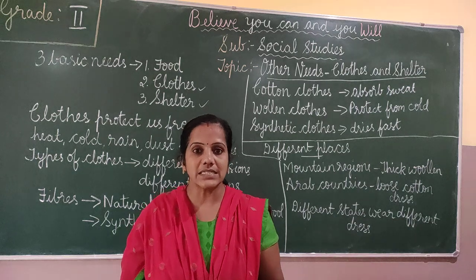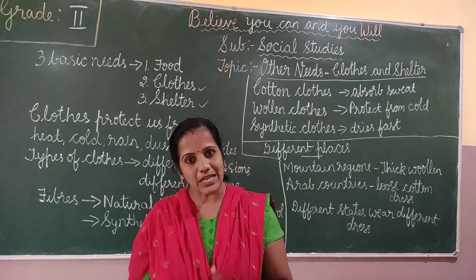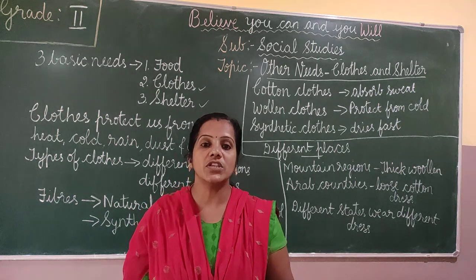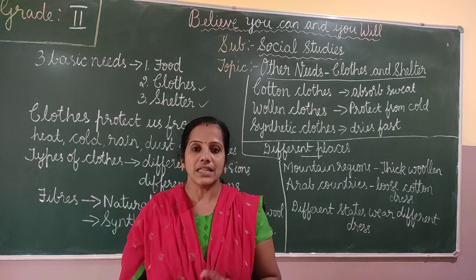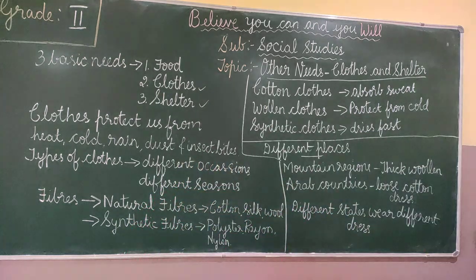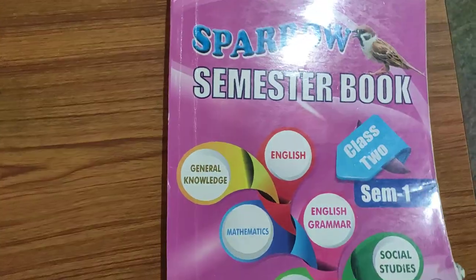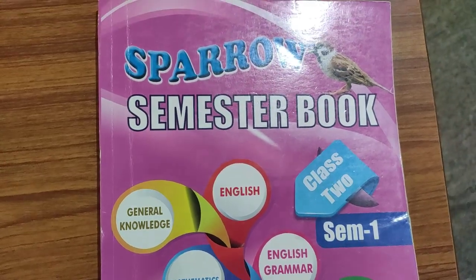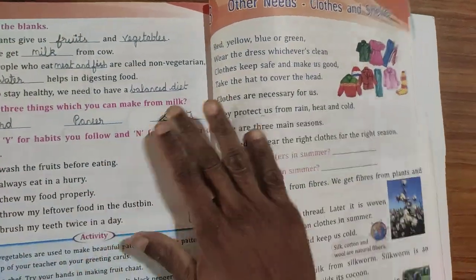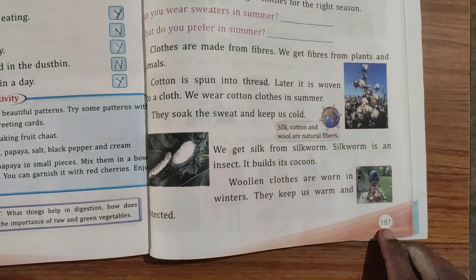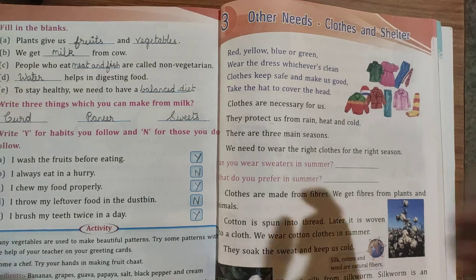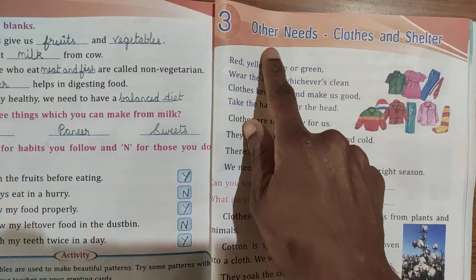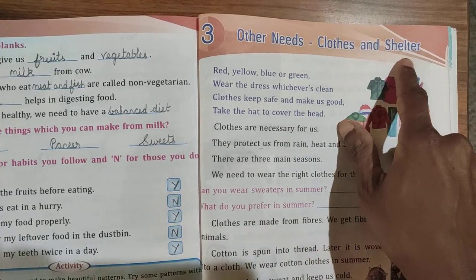In this lesson we are going to learn about clothes and shelter and how they are important to us. So before starting the lesson we will do a lesson reading. Everyone open your Sparrow Sem1 textbook. Lesson number 3, page number 187 — Other Needs: Clothes and Shelter.